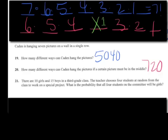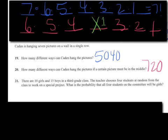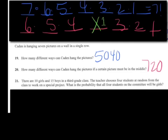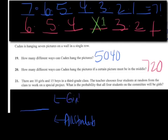The last problem on this particular page is right here. There are ten girls and fifteen boys in a third grade class. The teacher chooses four students at random for the class to work on a special project. What is the probability all four students on the committee will be girls? Probability means one fraction, so I need one fraction. Here I want all the students in the class and here is just the girls. Now keep in mind he's only choosing four students and four girls.